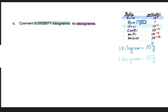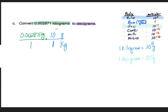Starting with what we know — 0.002871 kilograms — we write that over 1 to make it a fraction. Our next fraction needs kilograms on the bottom to cancel, with gram on top. The 1 stays with the kilograms and the 10 to the 3rd goes with the grams. Since the kilograms have canceled, we now have our units in grams. For the next step, we put grams on the bottom to cancel and decigram on top. With the base unit grams we put 10 to the negative 1, and with the prefixed unit decigram we put 1. The grams cancel and we're left with our answer in decigrams.